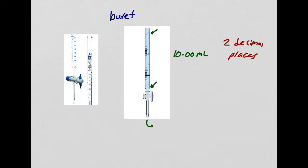Let's go over this again. Beaker — no decimal places. Flask — no decimal places. 10 mL graduated cylinder — two decimal places. 100 mL graduated cylinder — one decimal place. Volumetric flask, burette, or pipette — also good to two decimal places. These things really matter, because by using the right number of significant figures, you're telling me how accurately you measured.